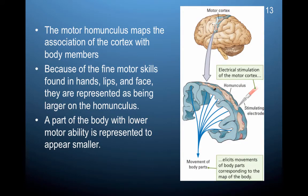Here's an example. The motor homunculus maps the association of the cortex with body parts. Because of the fine motor skills found in hands, lips, and face, they are represented as being larger on the homunculus. A part of the body with lower motor ability is represented to be smaller. This is the motor cortex, which sends instructions to move all the parts of our body.